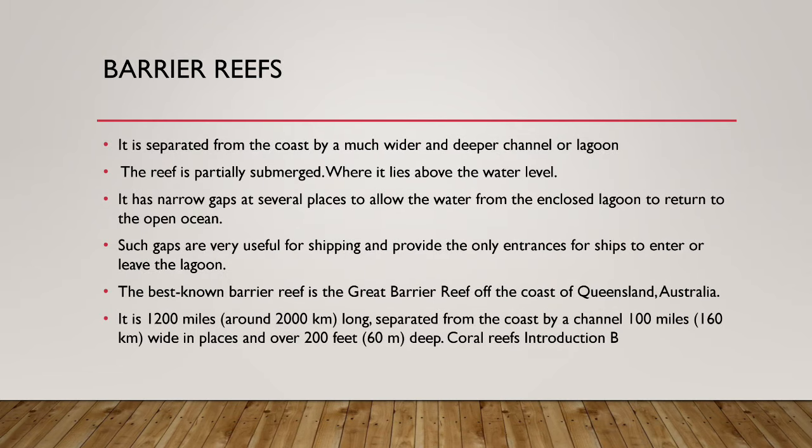Barrier reefs are separated from the coast by a much wider and deeper channel or lagoon. The reef is partially submerged where it lies above the water level. It has narrow gaps at several places to allow water from the enclosed lagoon to return to the open ocean — these gaps are very useful for shipping and provide the only entrance for ships. Examples include the Caribbean Islands and the Great Barrier Reef along Australia's Queensland coast.